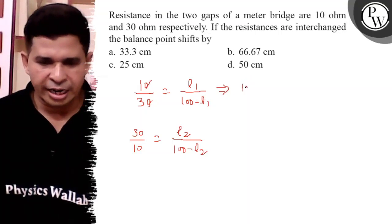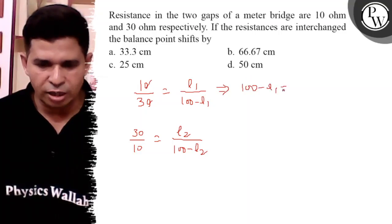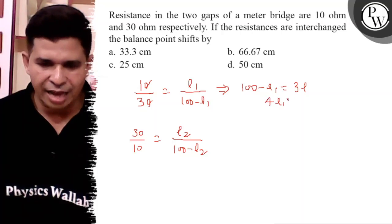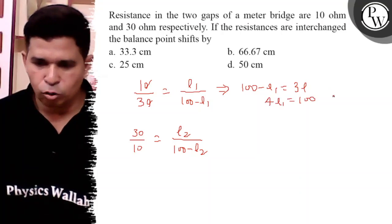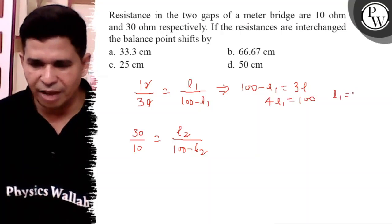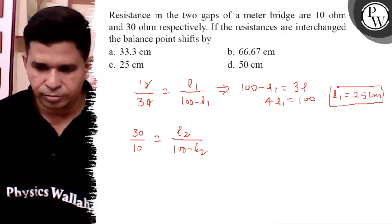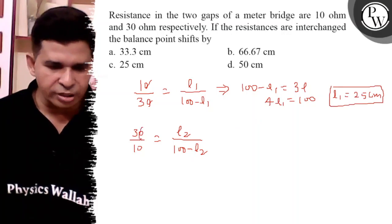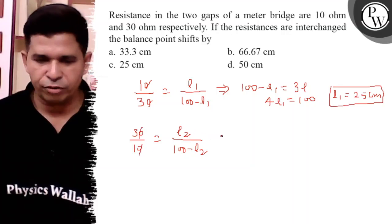So 100 minus L1 is equal to 3L1. So 4L1 is equal to 100, so L1 is equal to 100 by 4, which is 25 centimeter.